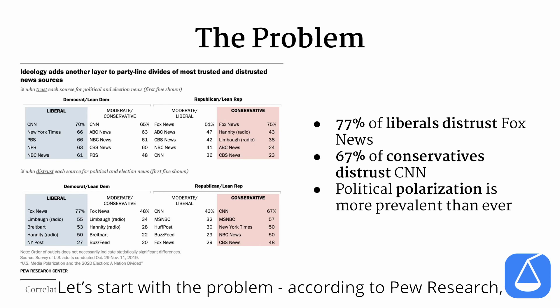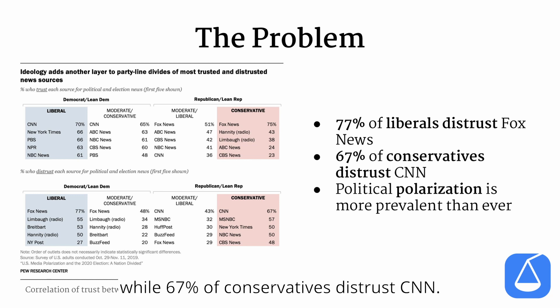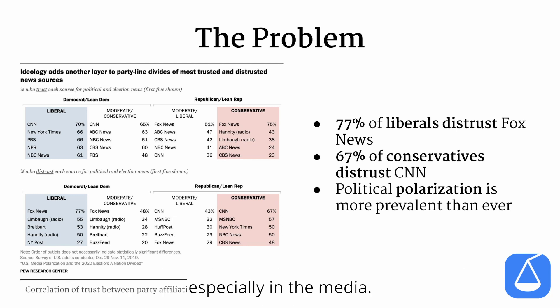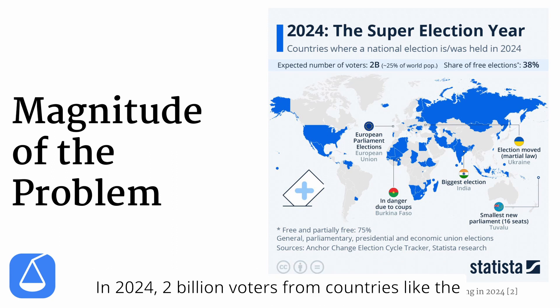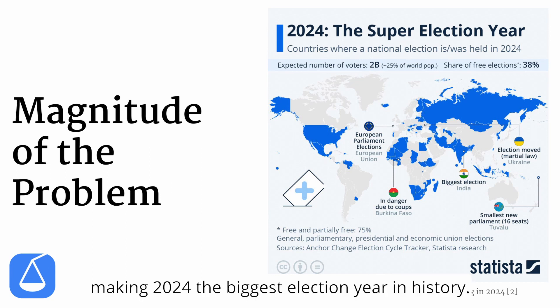Let's start with the problem. According to Pew Research, 77% of Liberals distrust Fox News, while 67% of Conservatives distrust CNN. This shows that political polarization is more prevalent than ever, especially in the media. And this issue of political polarization in the media has never been more important. In 2024, 2 billion voters from countries like the US, Mexico, and India will take to the polls to vote, making 2024 the biggest election year in history.